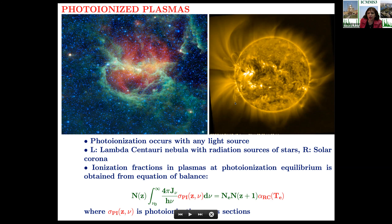If we want to know the abundance and ionization fraction of any element, we must use the photo ionization cross section and also the electron-ion recombination rate coefficient. This equation of balance shows photo ionization on the left side — the cross section with the flux density and the ion number — and the recombination rate coefficient on the right side. From this equation, we can find the ionization fraction using the cross section of photo ionization and electron-ion recombination.